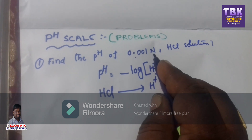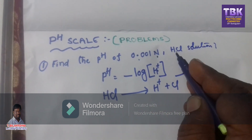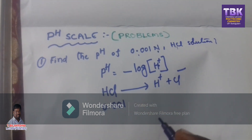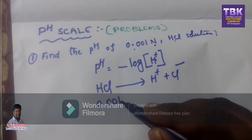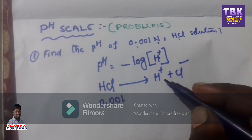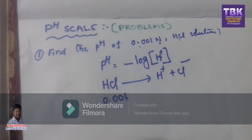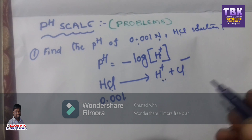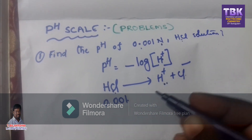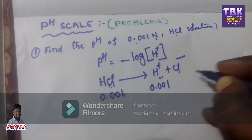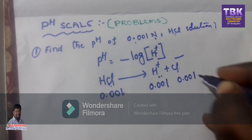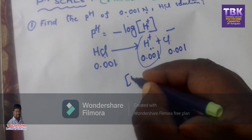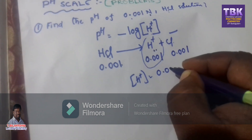You need to express the concentration of the solution. Normality is one way to express the concentration of a solution. What is the concentration of HCl? That is 0.001. By using this value, find out the concentration of H⁺ ion. The H⁺ ion concentration is 0.001.